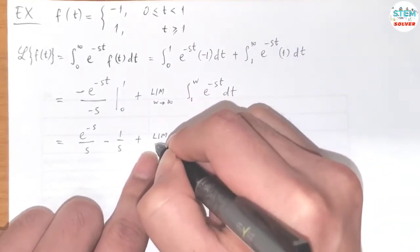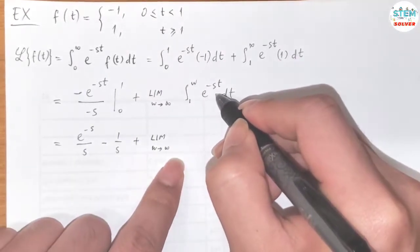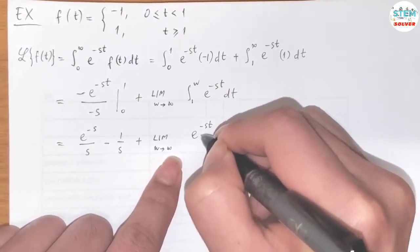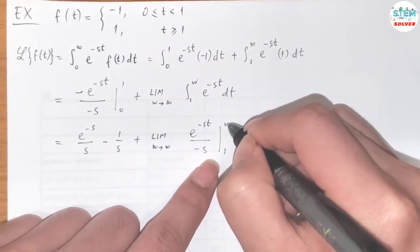So the limit of this one, we have limit as w goes to infinity. The integral of e to the negative st is e to the negative st over negative s. And we integrate from 1 to w.